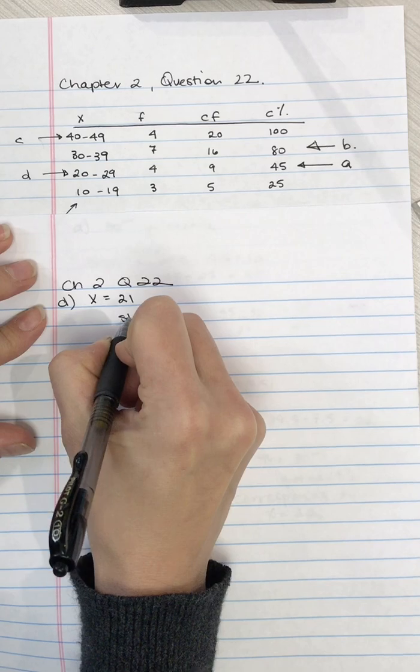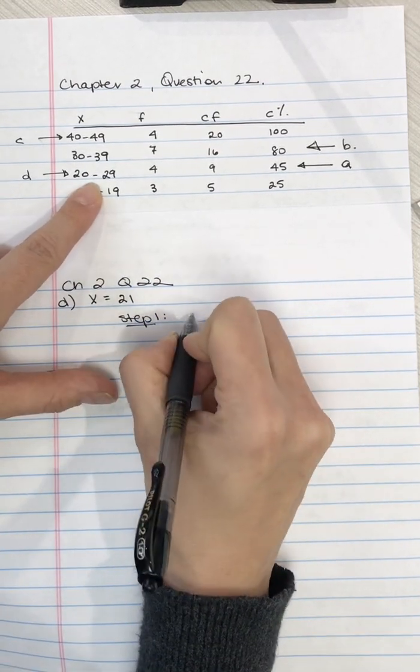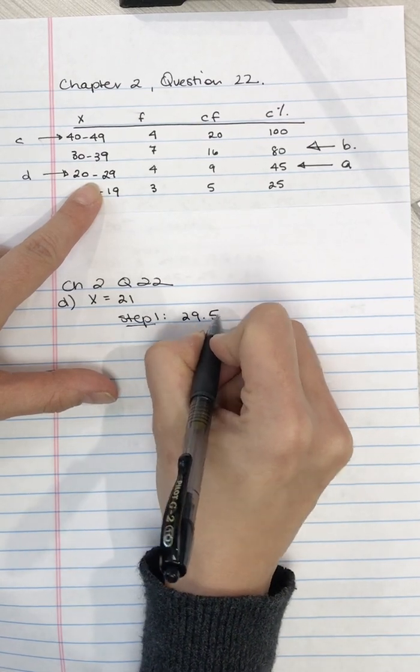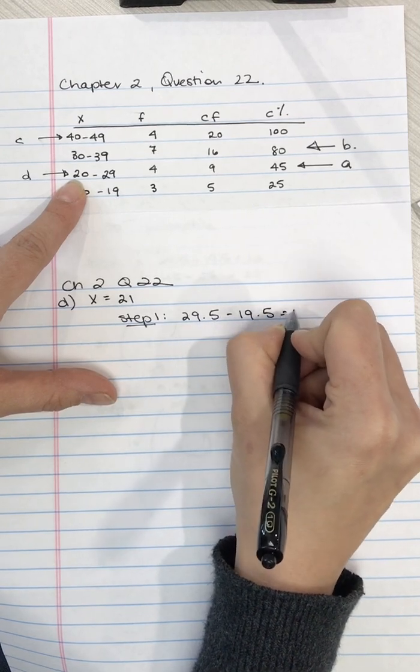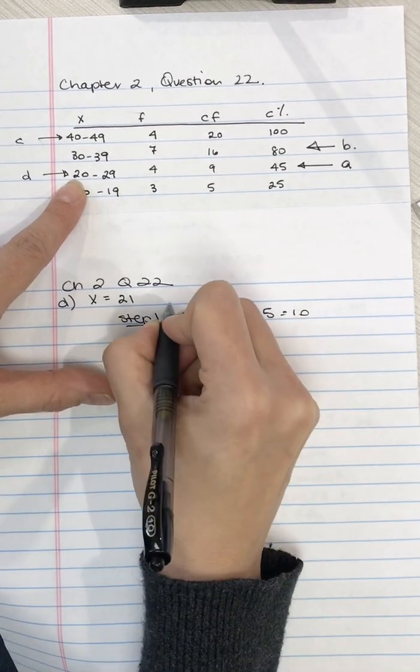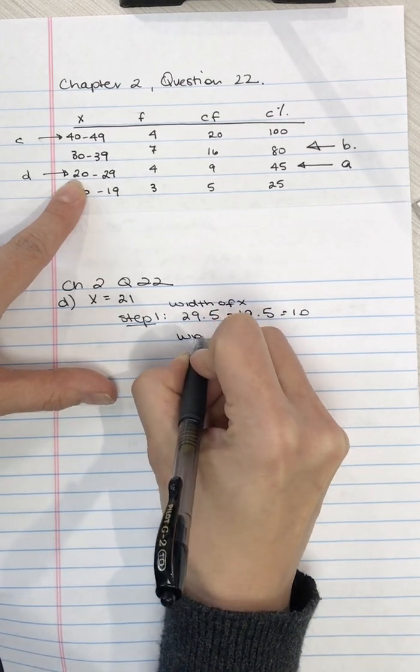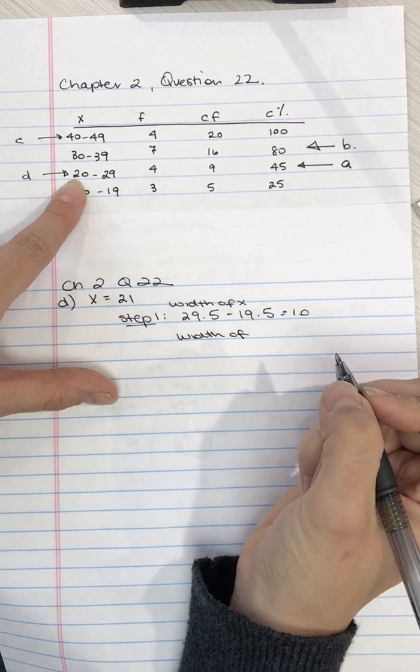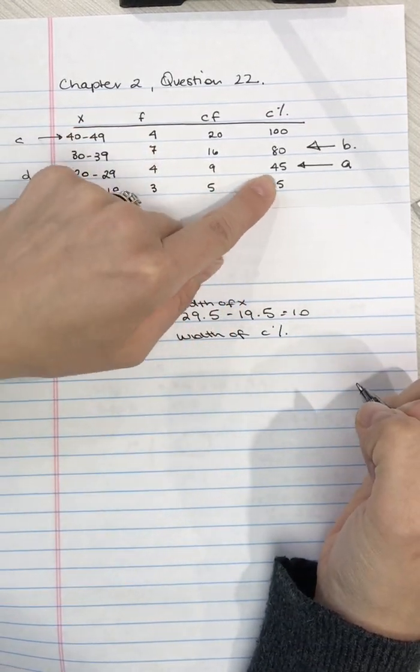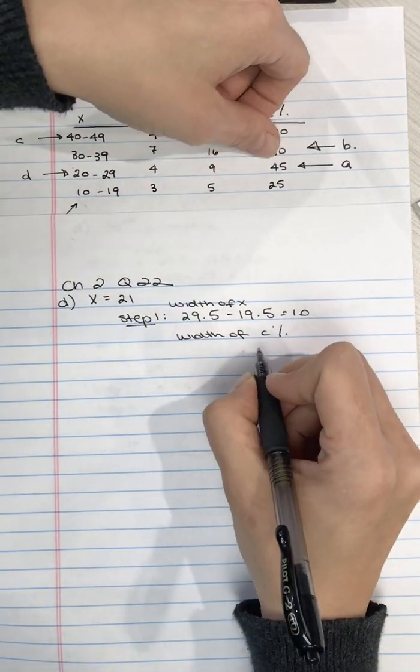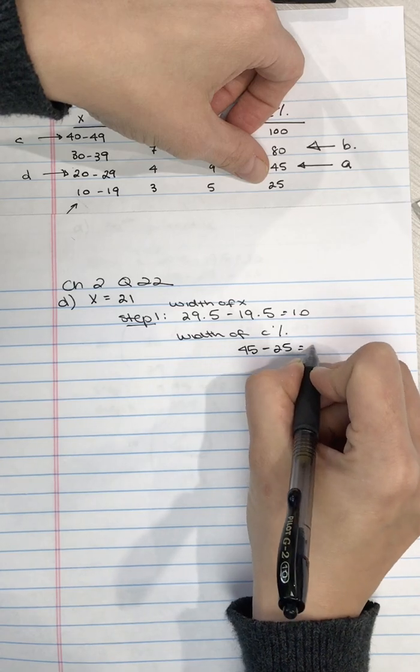So step 1, we need to find the width of this interval. So we need to take 29.5, the upper real limit, minus the lower real limit, minus 19.5, is 10. So that's width of x. Now we need to find width of the cumulative percentage. And so here, what we need to do is we need to take 45 minus 25, and we get the width of 20.